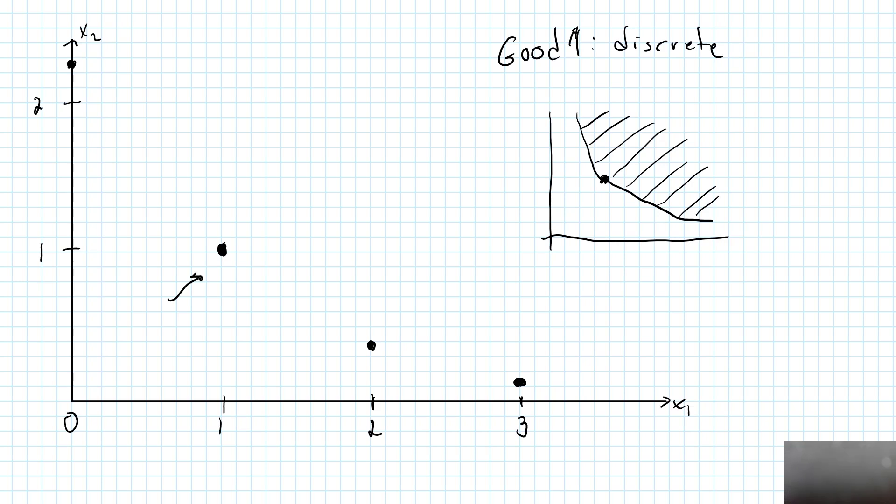I can only move up and down as good 2 is infinitely divisible. Due to strict monotonicity, we know that if I move downwards I must end up with a bundle which is worse. If I move upwards I must end up with a bundle that is better.